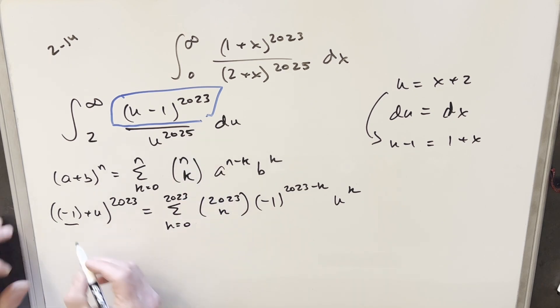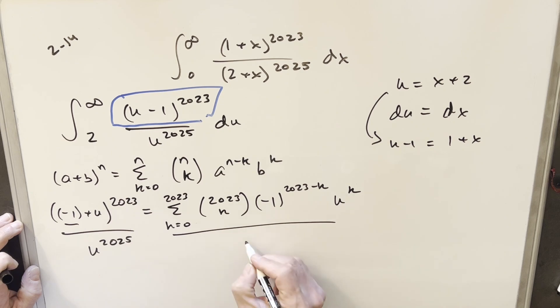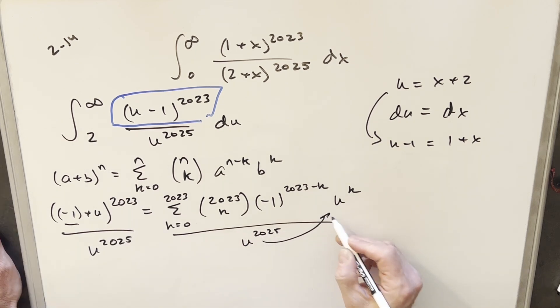But now our integral has this u to the 2025 in it. So what I'm going to do is divide both sides by u to the 2025. But then from here, what I can do is divide this into the u terms to combine the u terms. So when I rewrite this, let's see what we have.